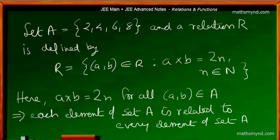Let's take a simple example to get a clear picture. Taking a set A which consists of the even natural numbers: 2, 4, 6, and 8.